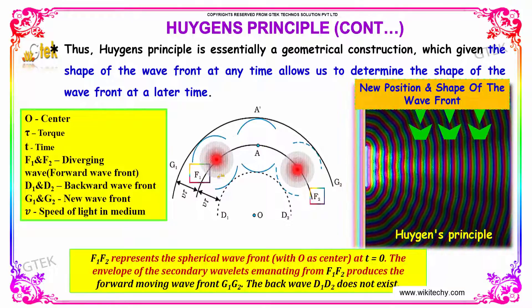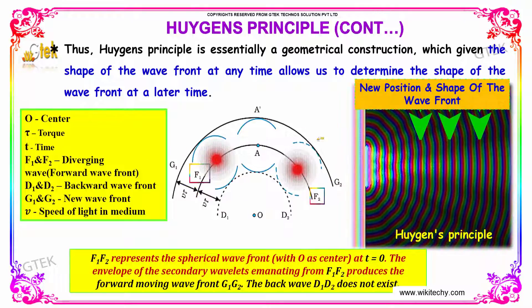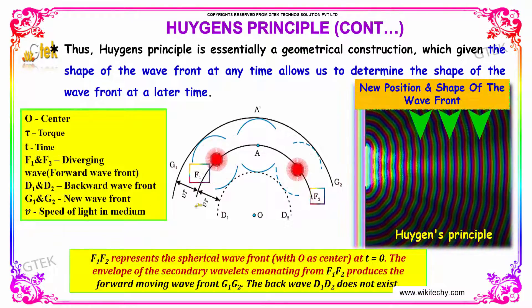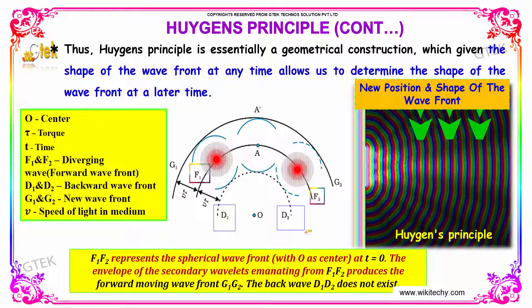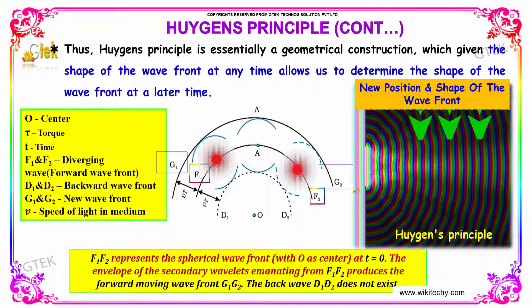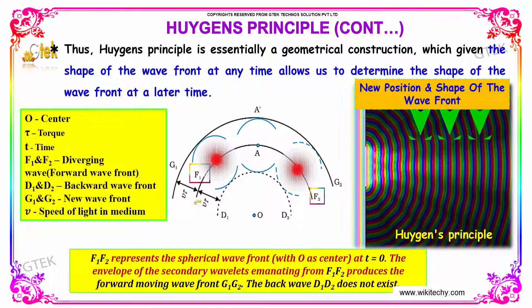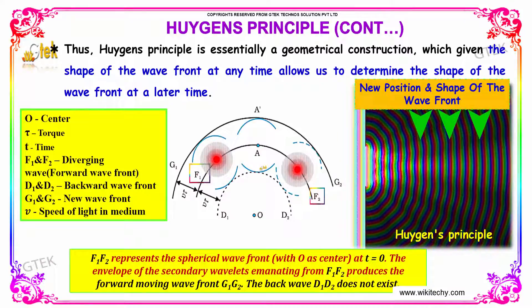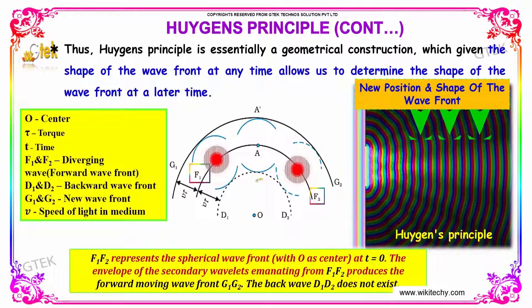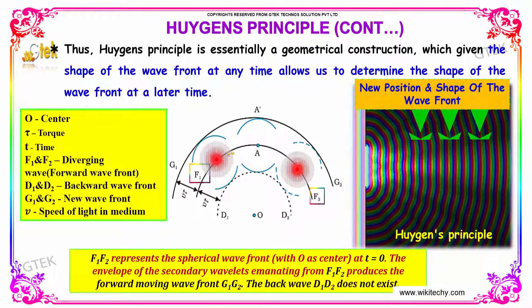Here we have an indication: O represents the center and tau represents the later time. These things are happening in time t. F1 and F2 indicate the diverging wave, D1 and D2 indicate the backward wavefront, and G1 and G2 indicate the new wavefront. V indicates the speed of light in the medium. F1 and F2 represent the spherical wavefront with O as center at time t equal to 0. The envelope of the secondary wavelets emanating from F1 and F2 produces the forward wavefront at G1 and G2. The backward wave D1, D2 does not exist.